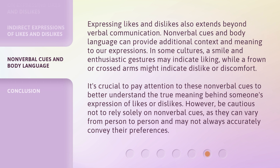Expressing likes and dislikes also extends beyond verbal communication. Nonverbal cues and body language can provide additional context and meaning to our expressions. In some cultures, a smile and enthusiastic gestures may indicate liking, while a frown or crossed arms might indicate dislike or discomfort. It's crucial to pay attention to these nonverbal cues to better understand the true meaning behind someone's expression of likes or dislikes. However, be cautious not to rely solely on nonverbal cues, as they can vary from person to person and may not always accurately convey their preferences.